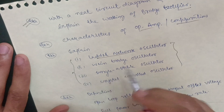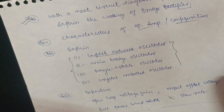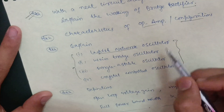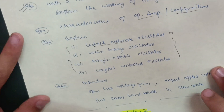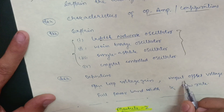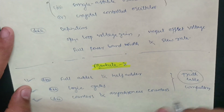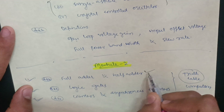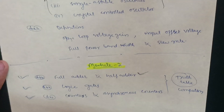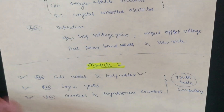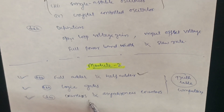Focus on these oscillators, as one will definitely appear in the examination. Also cover definitions of open-loop voltage gain, input offset voltage, full power bandwidth, and slew rate. In Module 2, cover full adder and half adder — the most important ones — logic gates, and asynchronous counters. Remember that truth tables are compulsory in this module; with the help of truth tables you should draw the full adder, half adder, and logic gates. You can go through just these three topics from Module 2.